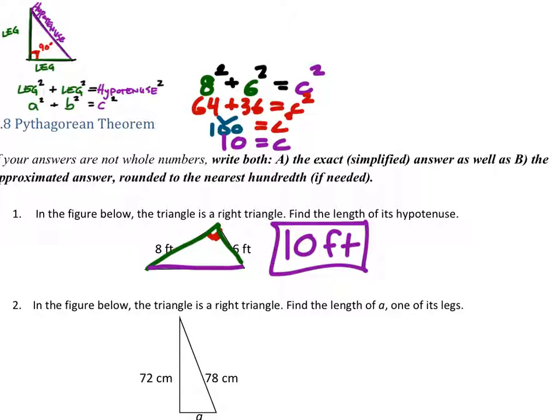Well then, what do we do on number two? Right here, the angle that I see that is 90 degrees looks like it's that one right there. And then that means they gave us a leg right here, and the hypotenuse right here.